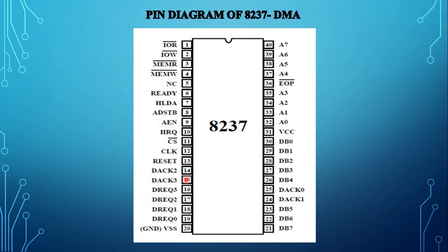Pin numbers 14, 15, 24, and 25 are DACK0 to DACK3, the DMA acknowledge output signals. These are output signals from the 8237 to the IO devices to inform the acceptance of the DMA request. These outputs are programmable as either active high or active low signals.